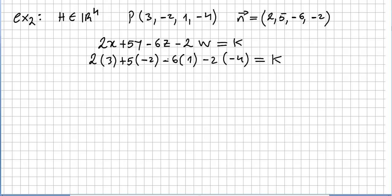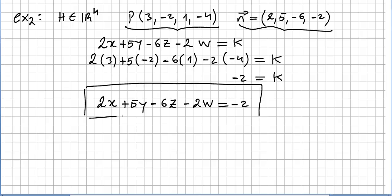And we get k equal to -2. So the equation of the hyperplane with this normal and passing through this point will be 2x + 5y - 6z - 2w equals -2.